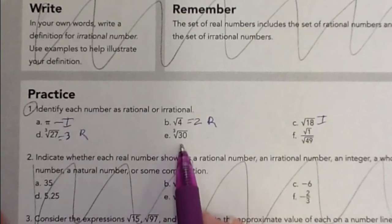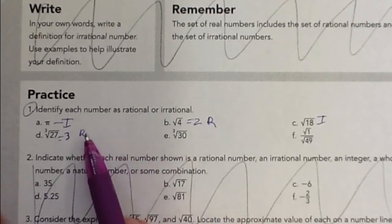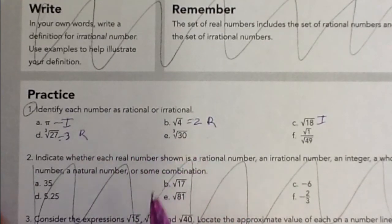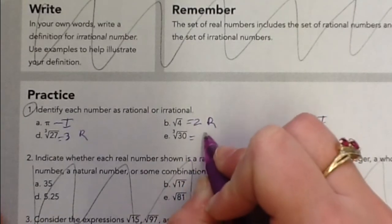And then here, we have something similar, cube root of 30. So that's very close, so it's going to be 3 point something, but those leftover digits are going to leave it irrational.